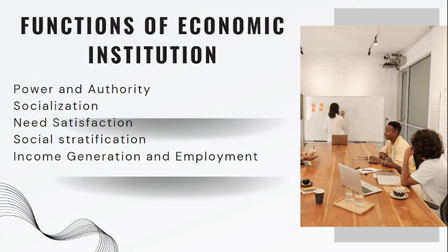The fourth function is social stratification — it refers to a system by which a society ranks or categorizes people in a hierarchy. Society is divided into different classes by distribution of economic resources, and social inequality plays a wider role in the smooth operation of society. The last function is income generation and employment: economic institutions provide opportunities for people to earn their livelihood, through which they satisfy their basic needs. So all these were the functions of the economic institutions.